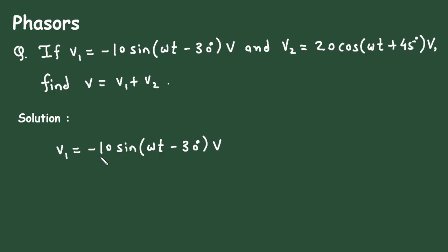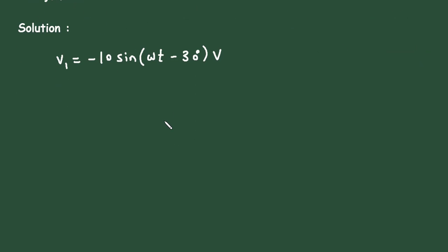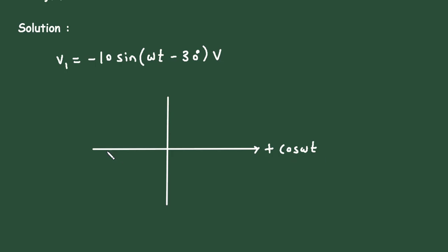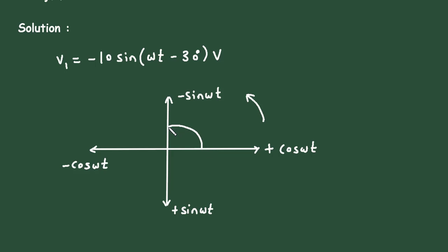Here we can see V1 is given in minus-sin form. We need to convert this into standard form, which means replacing minus-sin with plus-cosine. Looking at the phasor diagram: plus cos(ωt), minus cos(ωt), plus sin(ωt), and minus sin(ωt) — phasors rotate counter-clockwise. To move from minus-sin to cosine, the angle difference is 90°, so we add 90°.